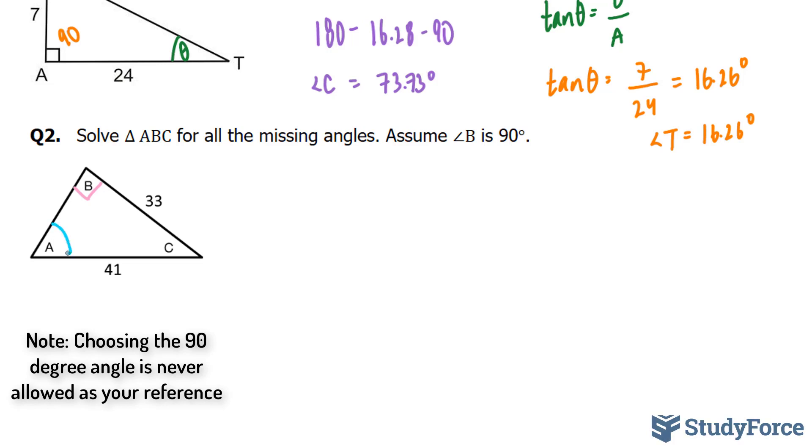Now, relative to A, we have this length and we have this length. Now, 41 represents the hypotenuse because the hypotenuse side is always opposite of the 90 degrees. So we know that the hypotenuse is 41 and we know the opposite is 33. So we have to find a trigonometric ratio that relates opposite and hypotenuse, OH. The only one that does that is sine.